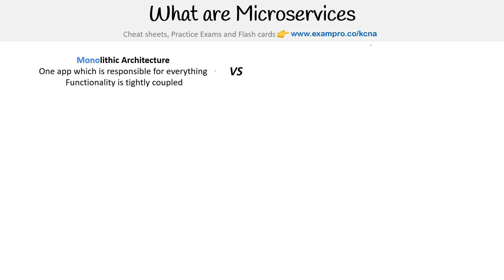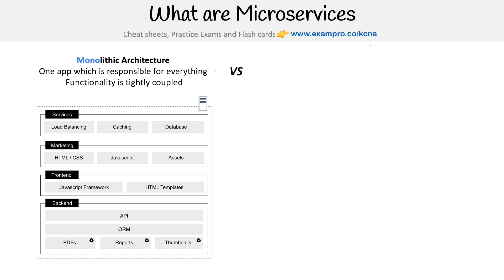Imagine you have a repository that contains everything — the database, caching, load balancing, the marketing website, the front end, the API, the ORM, background jobs, everything. Generally, monoliths are installed on virtual machines and don't utilize containers.